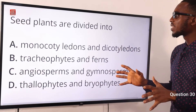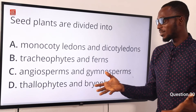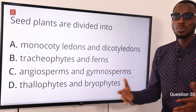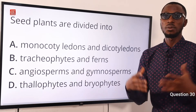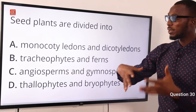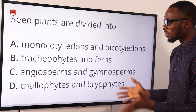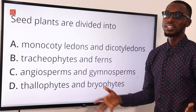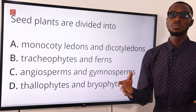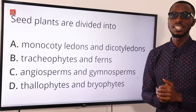Question 30. Seed plants are divided into angiosperms and gymnosperms. Gymnosperms bear their seeds naked and do not bear flowers — examples include cycads and conifers. Angiosperms have their seeds enclosed in fruits and also bear flowers; their subdivisions are monocotyledons and dicotyledons. Talking about thallophytes and bryophytes — we are talking about algae, liverworts, and mosses, which scientists believe are the first land plants. So seed plants are divided into angiosperms and gymnosperms. Option C is correct.